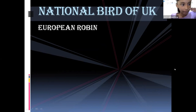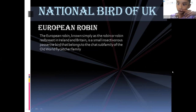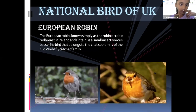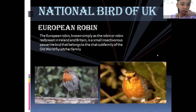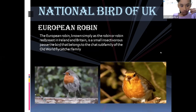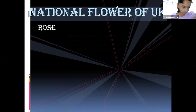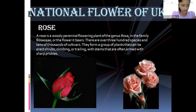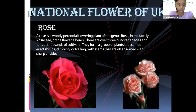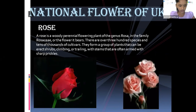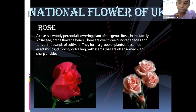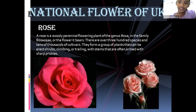The national bird of the UK is the European Robin, known simply as a Robin or Robin Redbreast in Ireland and Britain. It is a small insectivorous passerine bird belonging to the Old World flycatcher family. The national flower of the UK is the rose — a woody perennial flowering plant of the genus Rosa in the family Rosaceae. There are over 300 species and tens of thousands of cultivars; they can be erect shrubs, climbing or trailing, with stems often armed with sharp prickles.